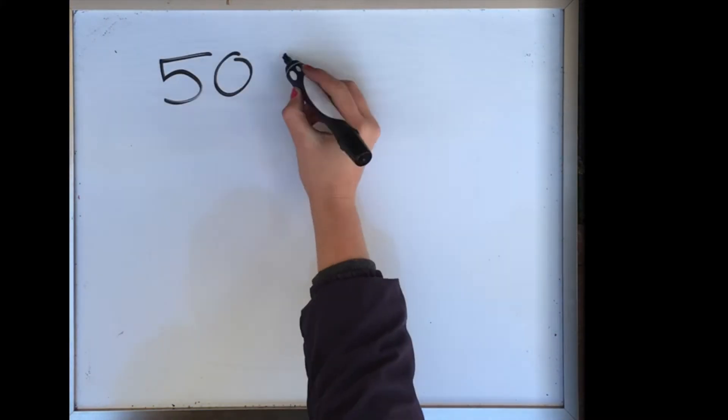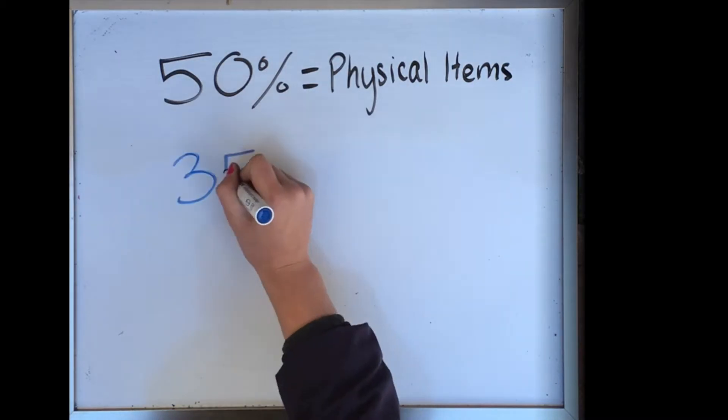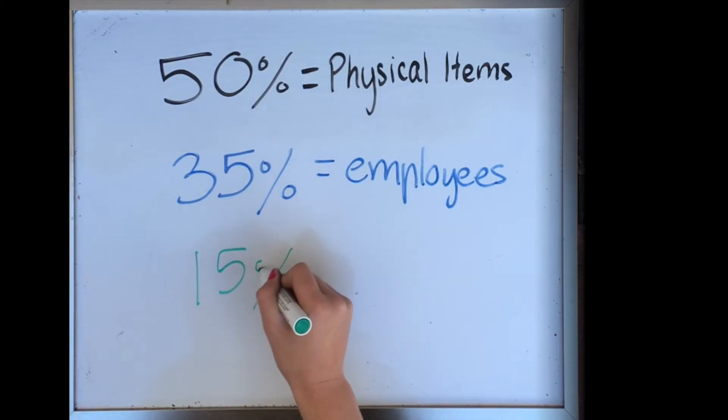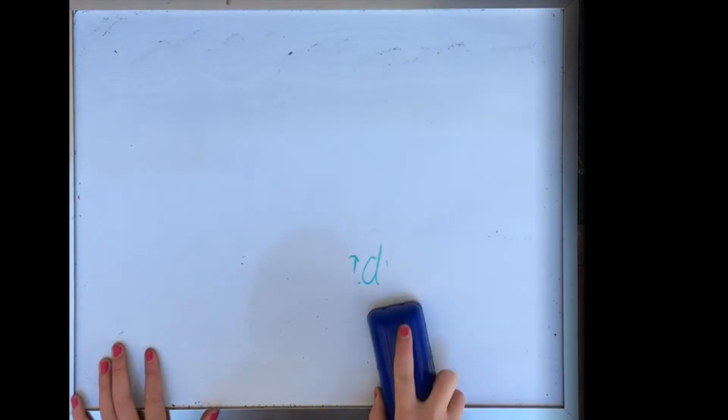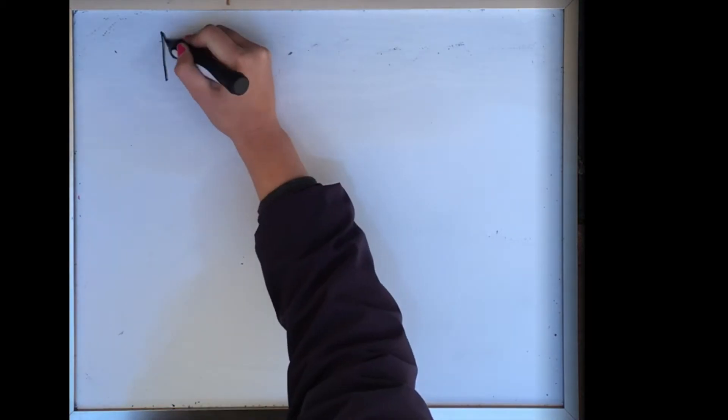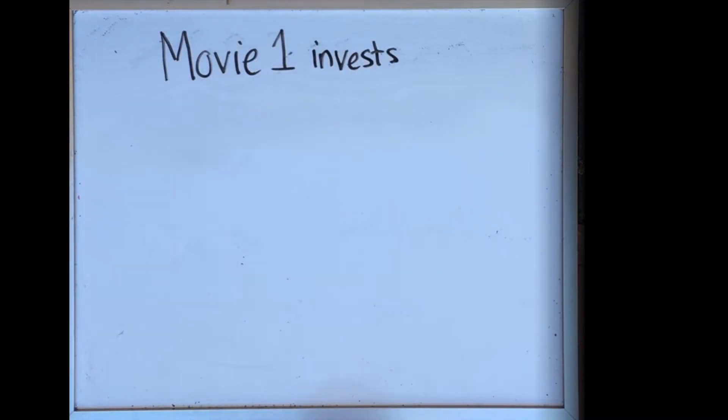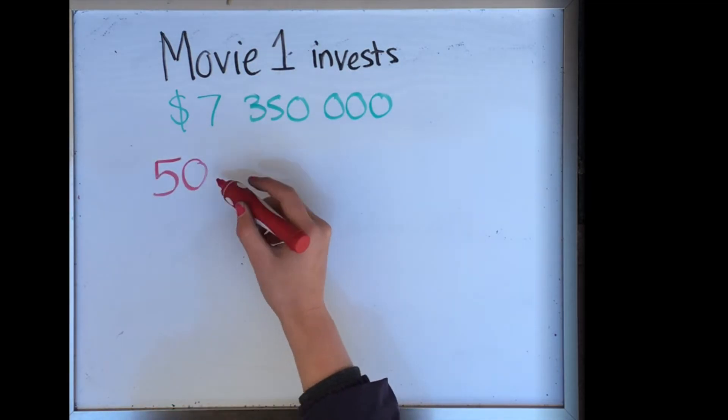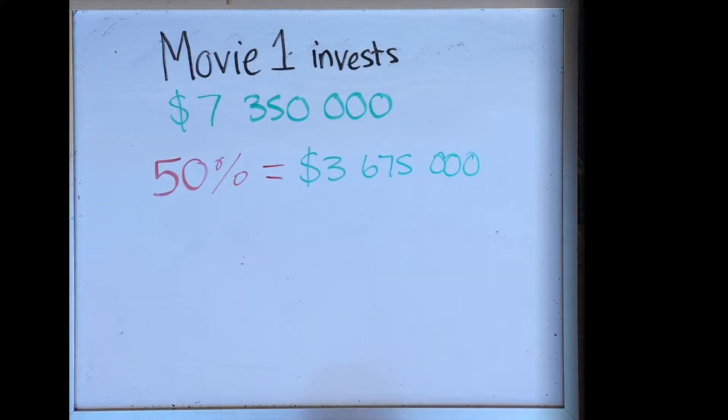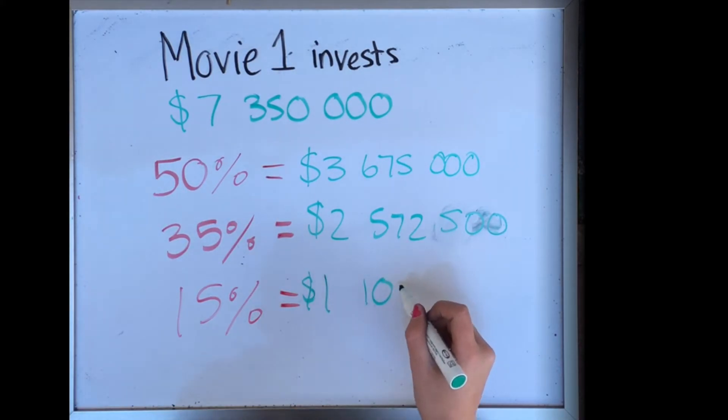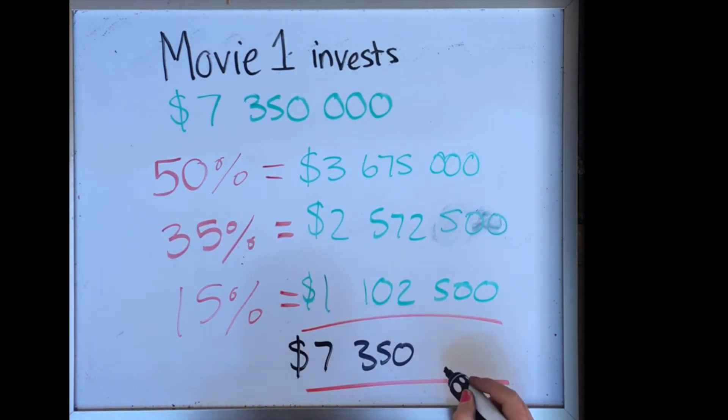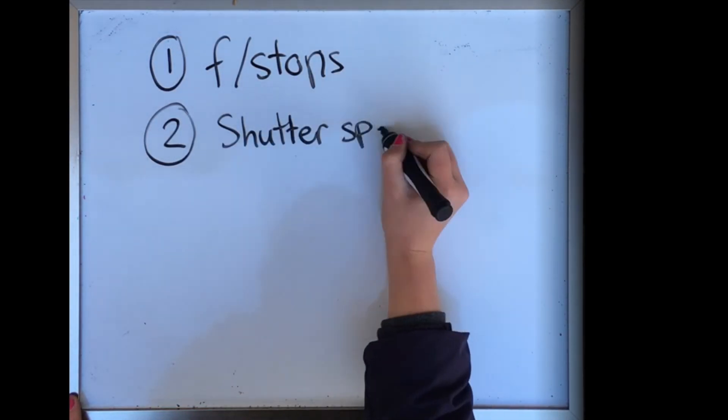Filmmakers generally use a 50 plus 35 plus 15 equals 100 method, which is 50% of the money for physical items for production, 35% for the wages of the employees, and the remaining 15% for advertising. Say the movie had invested $7,350,000, 50% would be $3,675,000, 35% would be $2,572,500, and 15% would be $1,102,000.